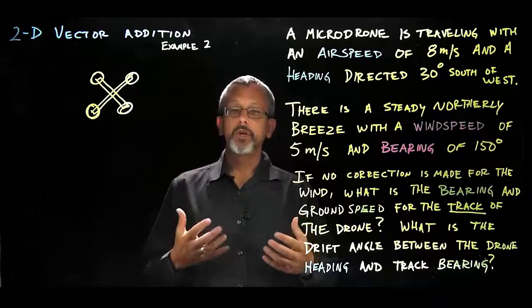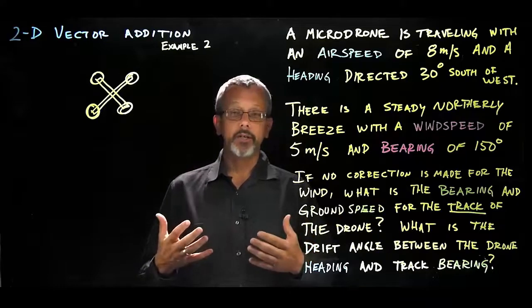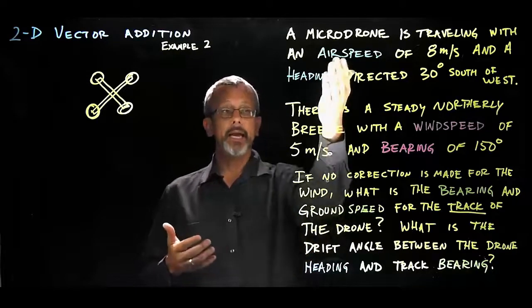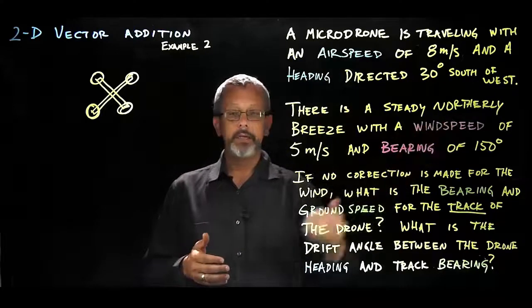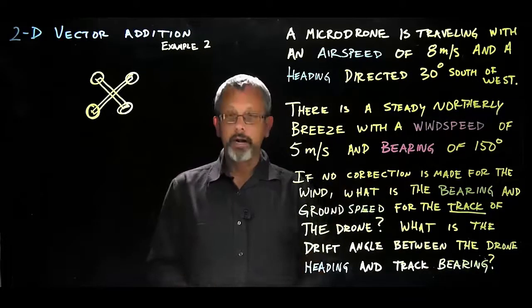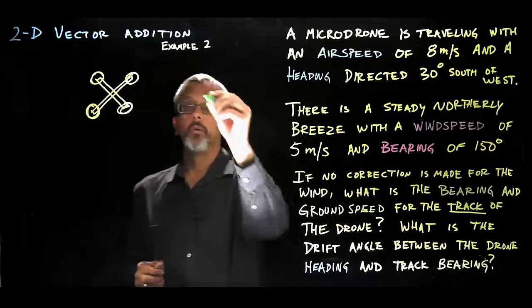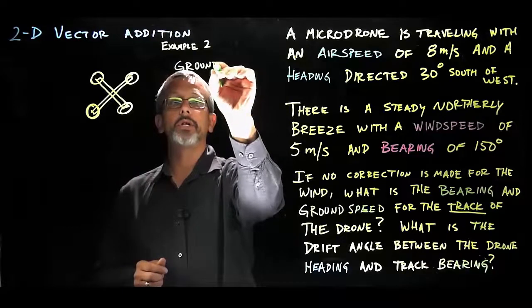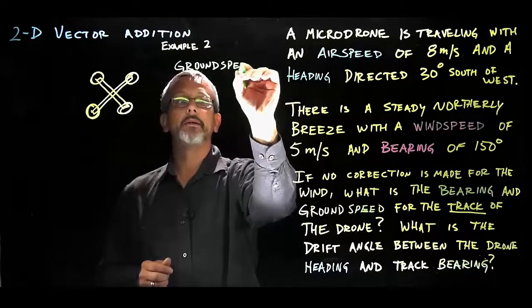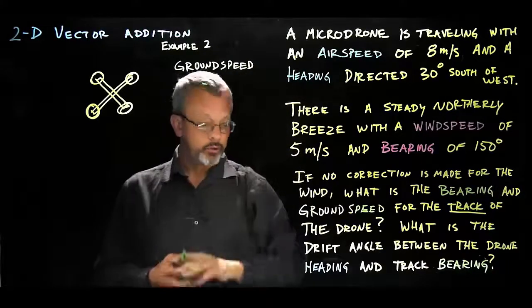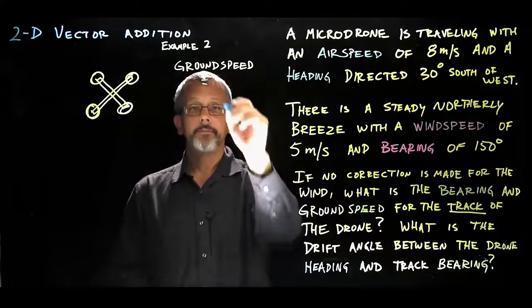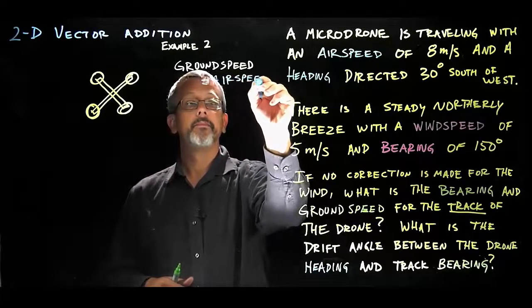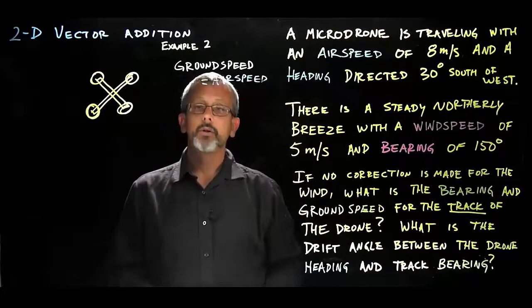This problem is going to require us to define some vectors, draw some vectors, and put those vectors together — to add the airspeed and the wind speed to determine the ground speed. The equation we're going to use: ground speed equals airspeed plus wind speed.